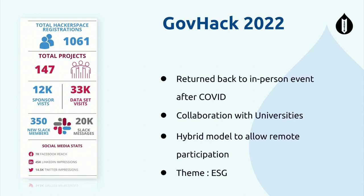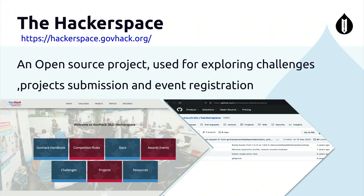From this year, we started theme-based GovHack events, meaning all challenges come around a central theme. We went with ESG this year — Environment, Social, and Governance. Hackerspace is our main platform where we publish our challenges, participants submit their projects, and register for events. Interestingly, Hackerspace is an open source platform — the code is available and anyone can use it to create another hackathon. We got it from one open source project and it has been developed for the last four or five years and is now much more mature.